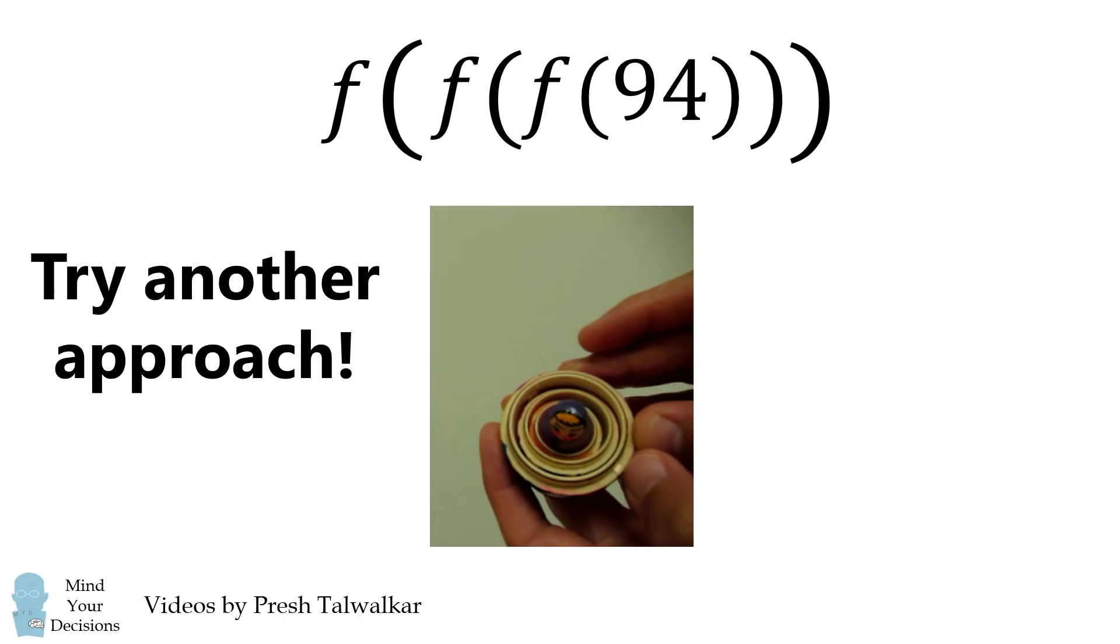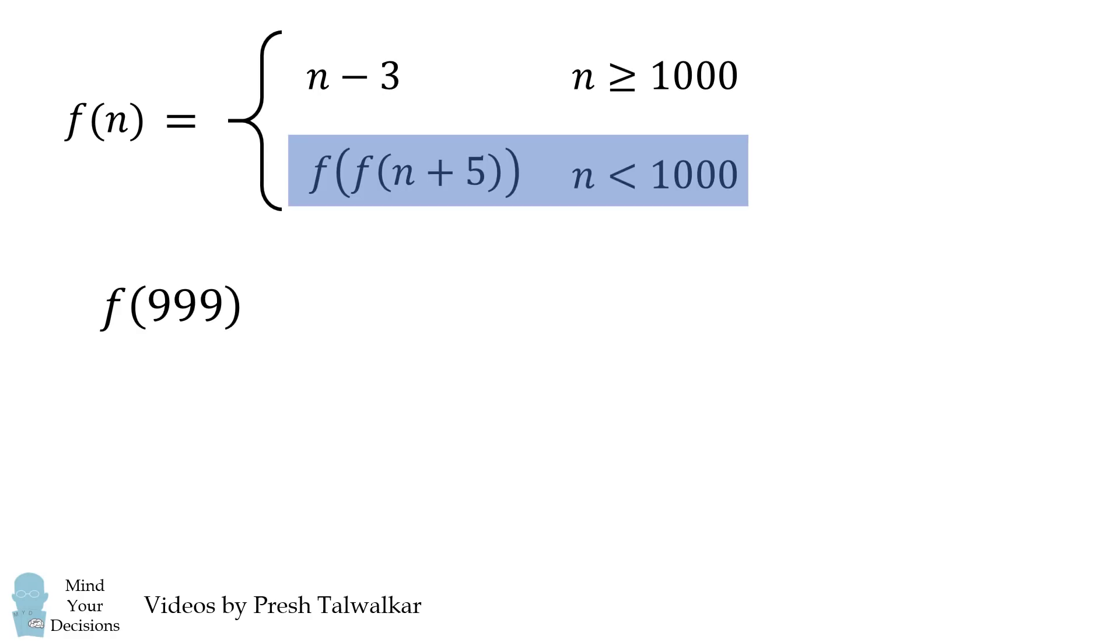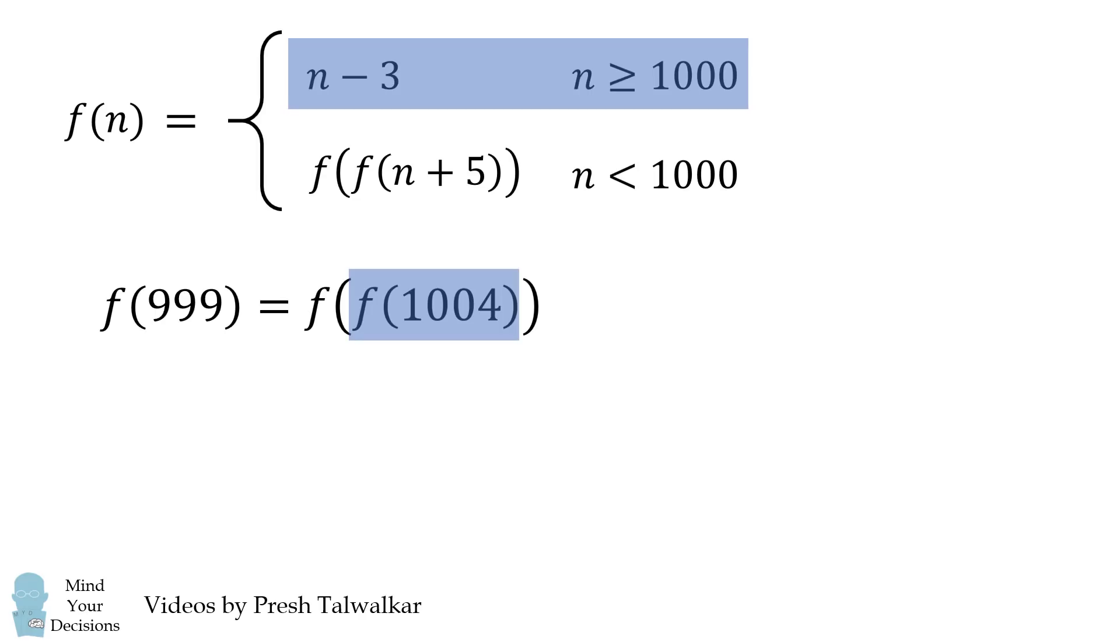Rather than directly trying to calculate f of 84, let's try working from the other direction. Let's try calculating from values around 1000. What is f of 999? By definition, this is equal to f of f of 1004. Now by definition, f of 1004 is equal to n minus 3, which is 1001. Now we apply the definition once more, and we get the answer of 998.